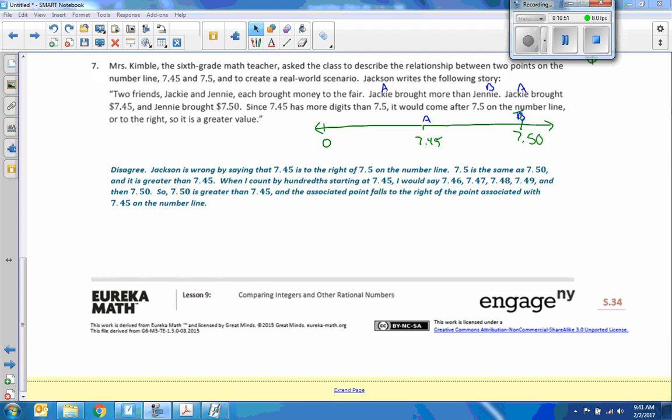So 7.45 has more digits than 7.5. It would come after 7.5 on the number line or to the right. So it is a greater value. I disagree. Jackson is wrong by saying that 7.45 is to the right of 7.50 on the number line. So 7.5 is the same as 7.50 and it is greater than 7.45. When I count by hundred starting at 7.45, I'd say 7.46, 7.48, 7.49, and then 7.50. So 7.50 is greater than 7.45. When the associated point falls to the right of the point associated with 7.50 on the number line.